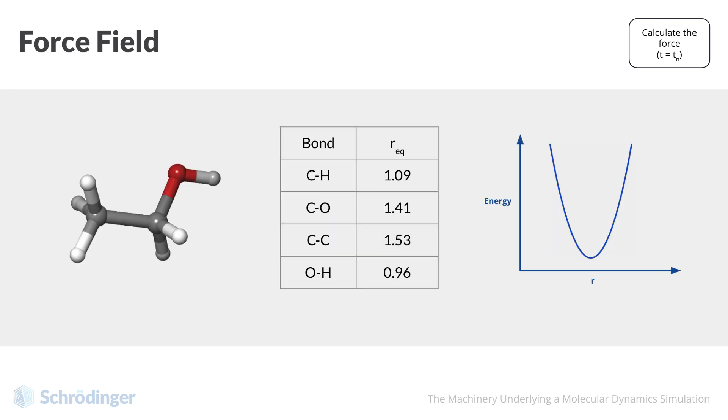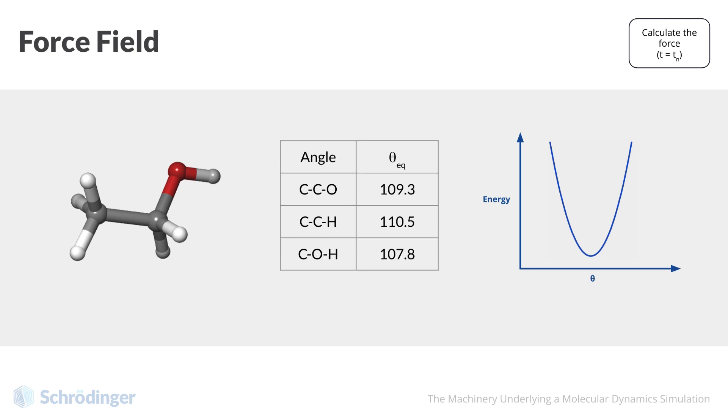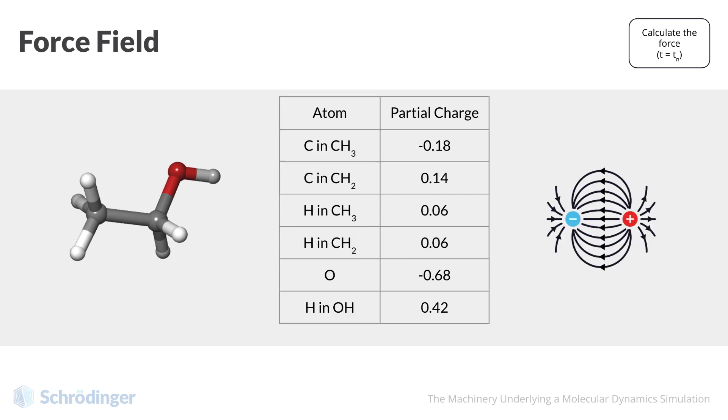Here is an example of some force field parameters for ethanol. The force field is a transferable set of parameters used to calculate the potential energy in the system. In ethanol, there are equilibrium bond lengths given by a simple harmonic potential. There are angles, similarly. And the force field includes electrostatic charges on the atoms. These parameters, and the others mentioned earlier, are all used to determine the potential energy of a particular configuration.